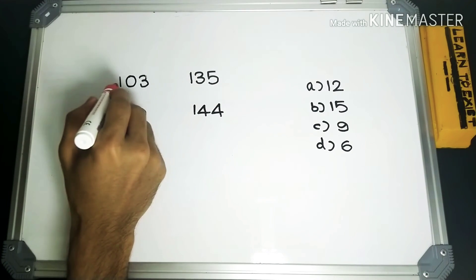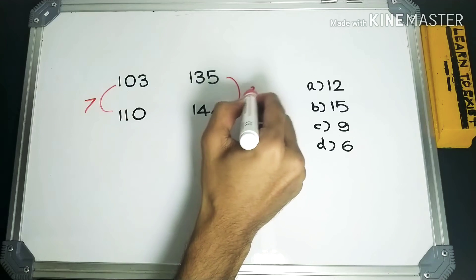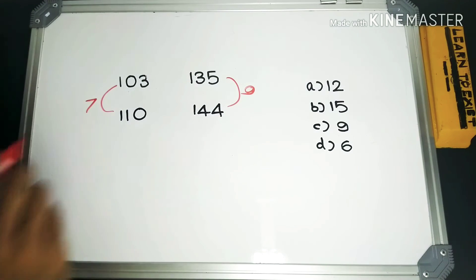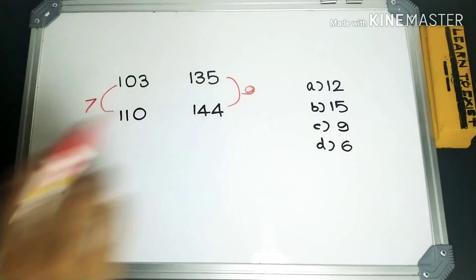So the difference of these two numbers will be 7, and the difference of these two numbers will be 9. Now if we take the ratio of these two numbers, it would be 7 is to 9. There is nothing in common between them.